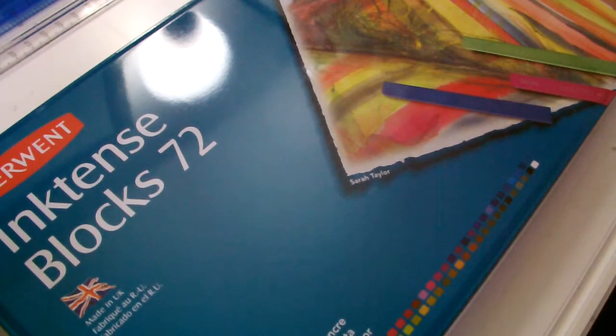In this lesson I want to continue building on the previous lessons where we were using the cubes. Now what I've got here is a tin of Derwent inktense blocks. Now they also do them in pencils.